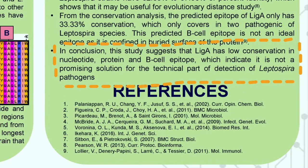In conclusion, this study suggests that LiA has low conservation in nucleotide, protein, and B-cell epitopes, which indicates it is not a promising candidate for the detection of Leptospiral pathogens. That's all from me. Thank you so much.